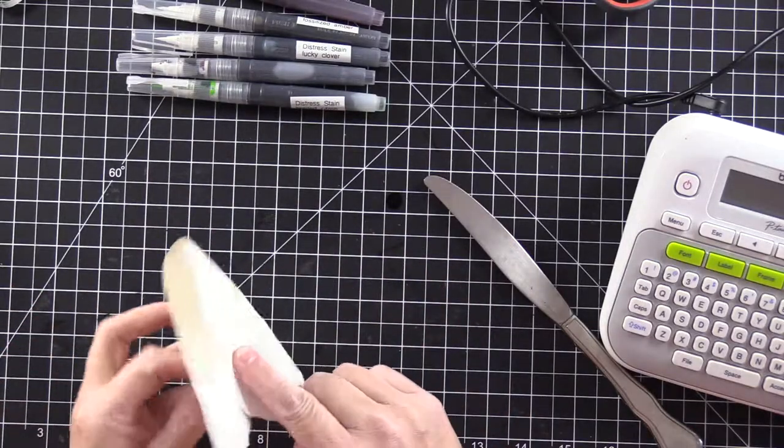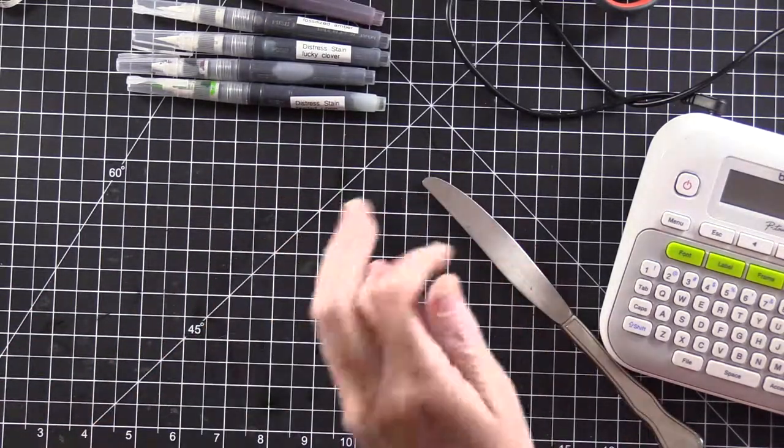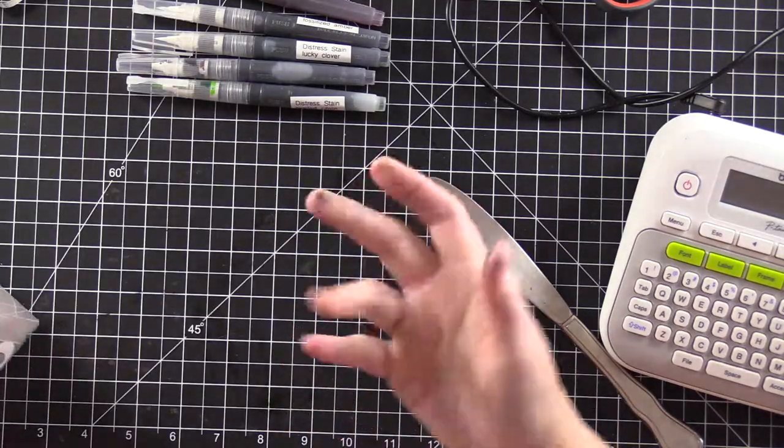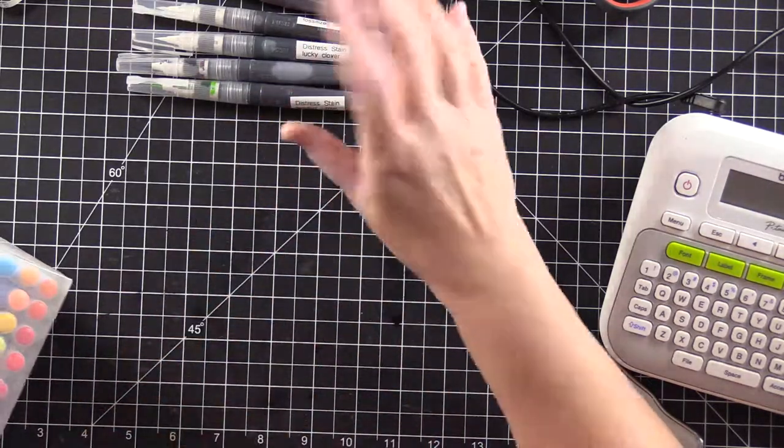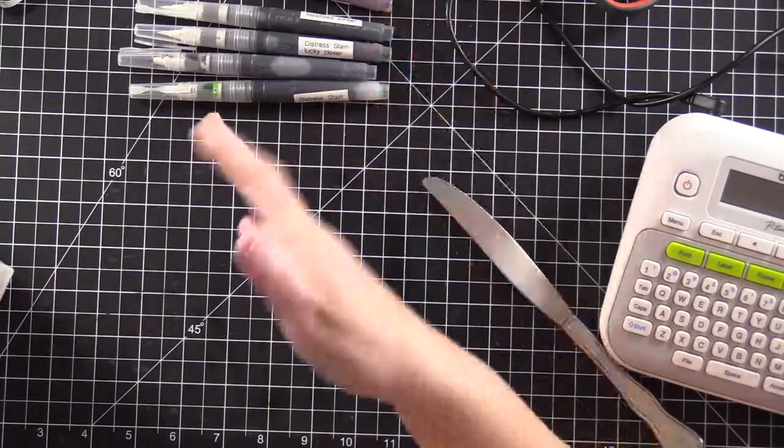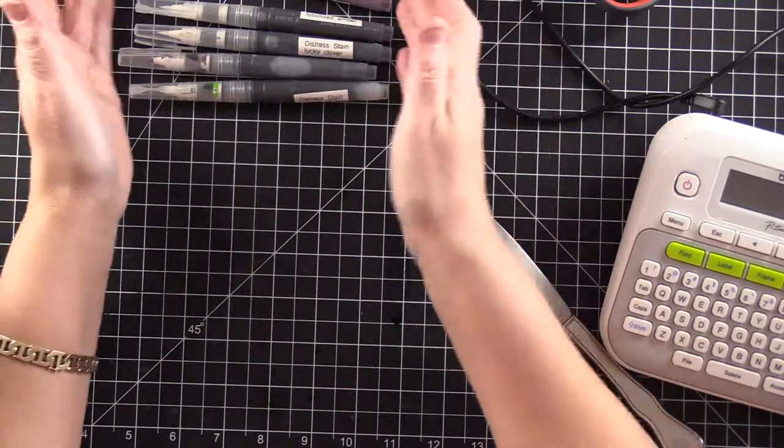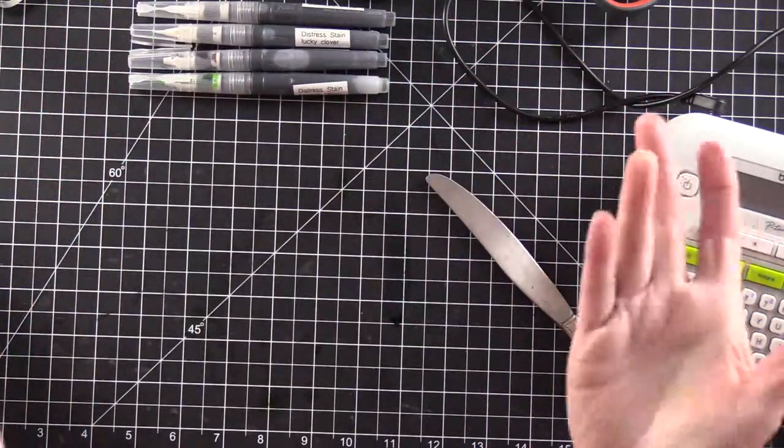So then whenever you're doing crafty things and you are using, let's say your Zig clean color and you want to use a color that's not in there like a hickory smoke or something that's a little more subdued and not as bright, you could just pull one of these things out.